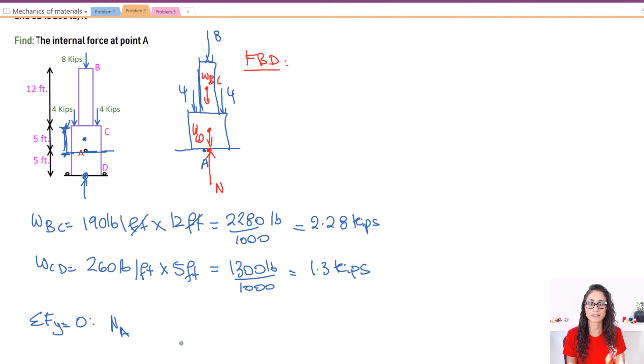So I have the N, which is the normal force at point A. So let's call this NA. So I have NA, then I have minus the weight of CD. So I have minus 1.3 kips. Then I have minus 2.28 kips, which is for the weight for BC. Then I have minus 2 of 4s. So it's going to be minus 2 times 4. Then I have minus 8. And this is equals to zero. So this is equals to 19.6 kips.